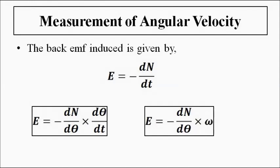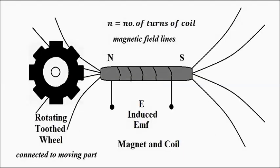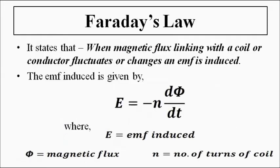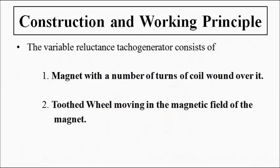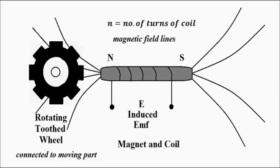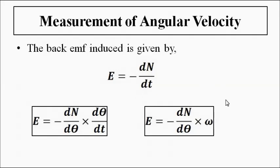So here we have discussed about the variable reluctance tachogenerator — the basic principles of operation, the construction, the output expression, and how it is related to angular velocity. I hope you like this video. Please subscribe to the channel Engineering Tutorial for more videos related to electrical, electronics, instrumentation, and communication engineering. Have a great day. Thank you very much.